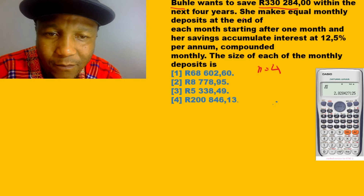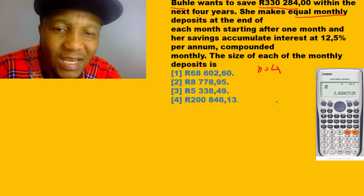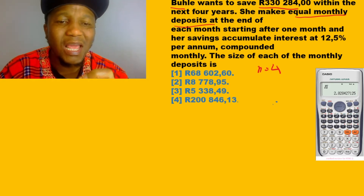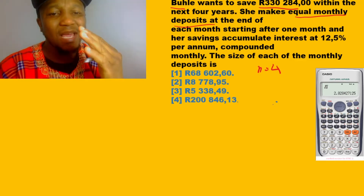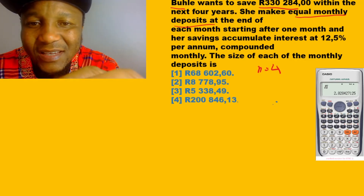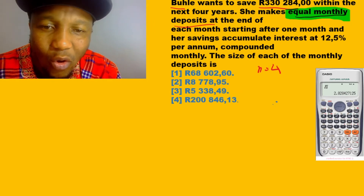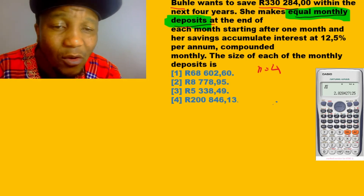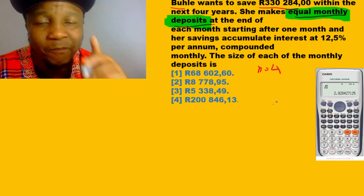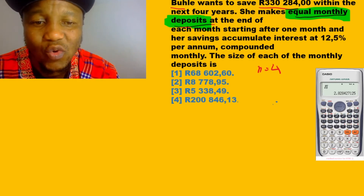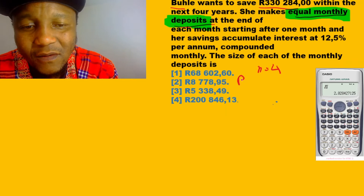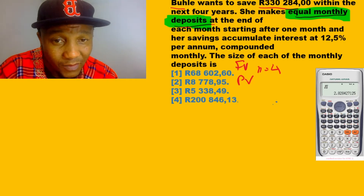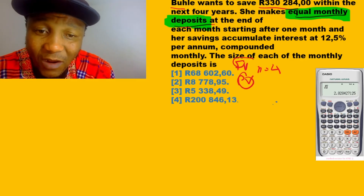She makes equal monthly deposits. Let me tell you something: whenever they say 'equal monthly payment' or 'equal monthly deposit,' for the most part, that's your cue to use either the present value formula or the future value formula. I'll write both for you now. Keep that in mind — it's a tricky distinction.